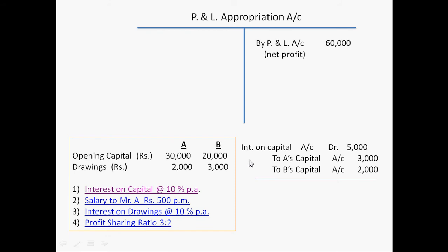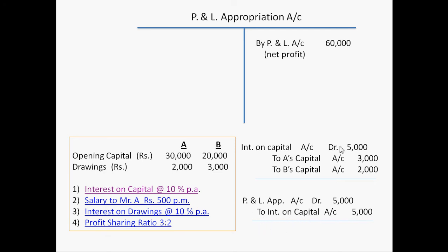After this entry, one more entry firm will pass just to close this interest on capital account. In this entry the account is debited, so in the next entry it will be credited in order to close this account: P&L appropriation account debited, to interest on capital account. This interest on capital account is closed by transferring it into the profit and loss appropriation account. This second entry will be posted on the debit side of P&L appropriation account — to interest on capital account.